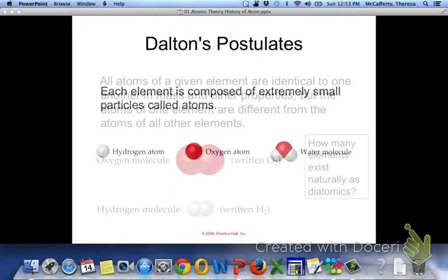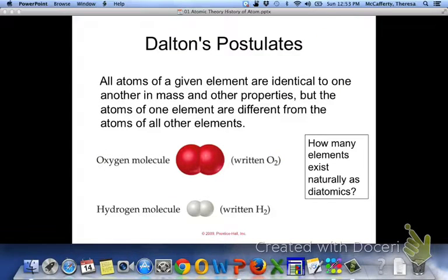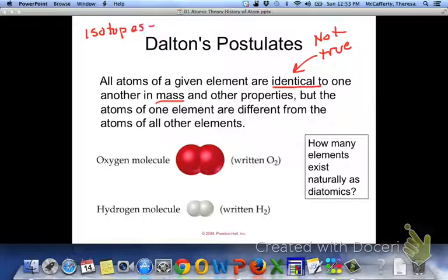That hopefully you know is true. The second postulate is that all atoms of a given element are identical to one another in mass and other properties, but the atoms of one element are different from the atoms of all other elements. This one is not quite true. Identical in mass is not true. If you remember the definition of isotopes, isotopes are atoms of the same element that differ in mass.